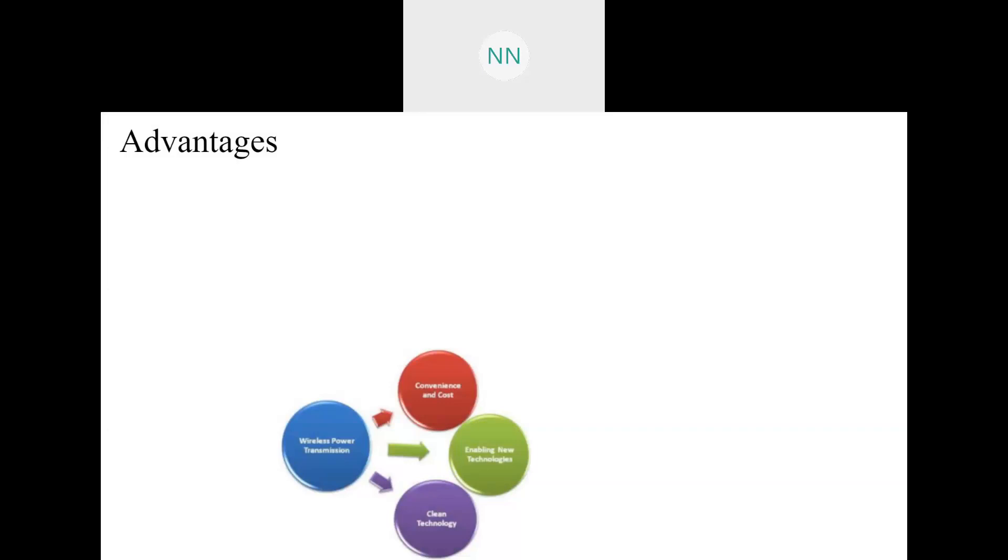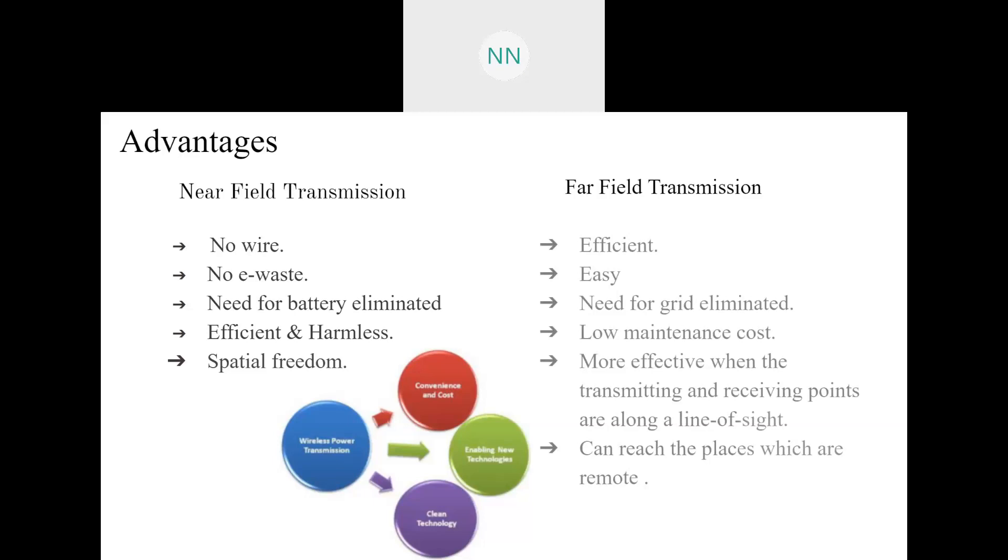Now moving to the advantages. First, we will see the advantages of near field transmission: no wires, no e-waste, need for batteries eliminated, efficient and harmless, and spatial freedom. Spatial freedom means we need not align our equipments anymore. We have spatial freedom and also near field transmission enables multiple device power transmission. Far field transmission has many advantages. They are efficient, easy, the need for grid is eliminated, and low maintenance. They have low maintenance cost. This technique completely reduces existing high tension power transfer cables, substations, and towers. The cost of transmission and distribution and also the cost of consumption of electricity can be reduced to a very good extent by using far field transmission.